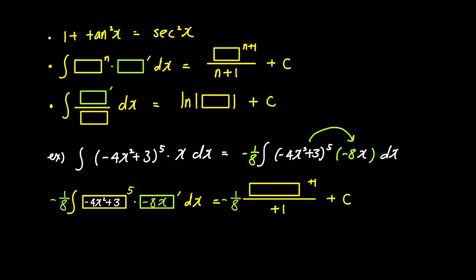Apply the same process to the right side with n = 5, inserting the yellow box with the same term (-4x² + 3), and the answer simplifies to (-4x² + 3)⁶ over 6 plus c. This method makes the integration process efficient and easy.